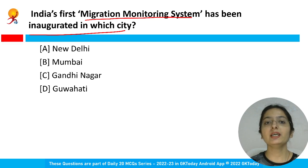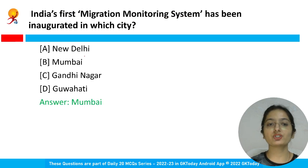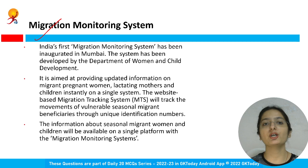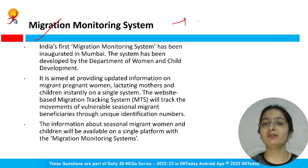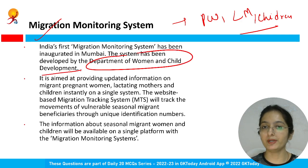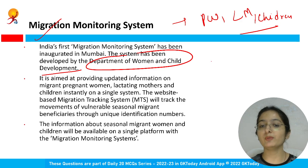India's first Migration Monitoring System has been inaugurated in which city? The right answer is Mumbai, option B. The Migration Monitoring System aims to provide updated information on migrant pregnant women, lactating mothers, and children instantly on a single system. This system has been developed by the Department of Women and Child Development.